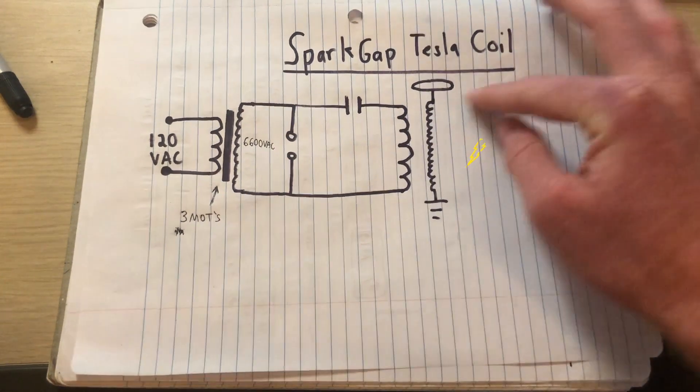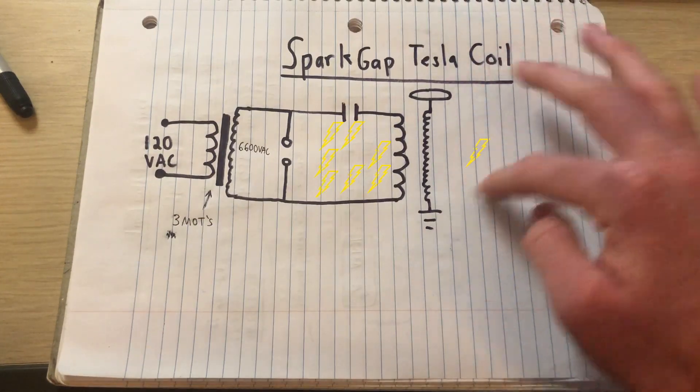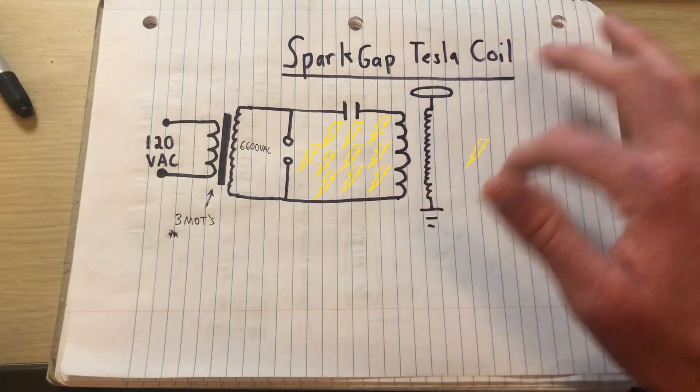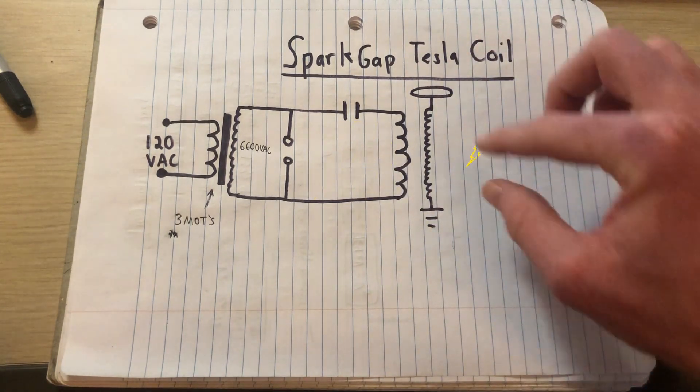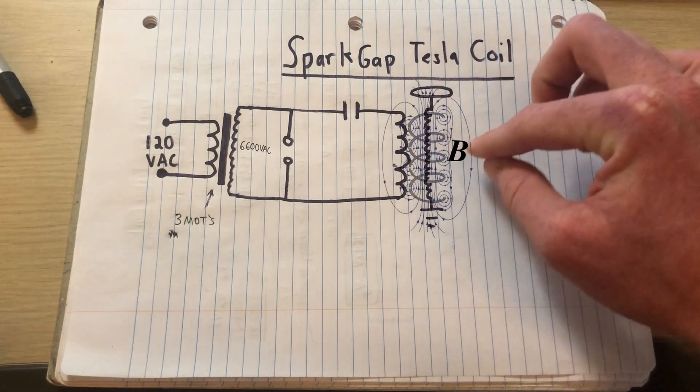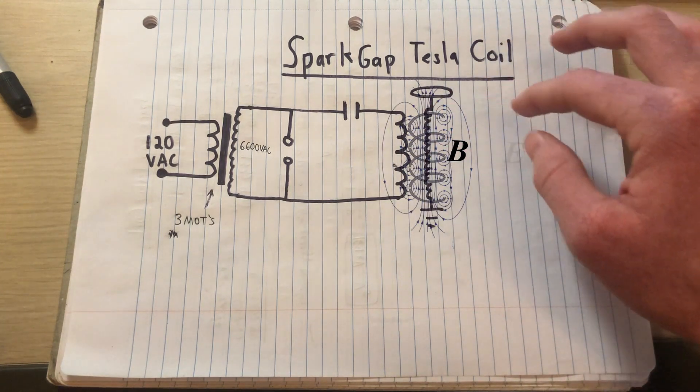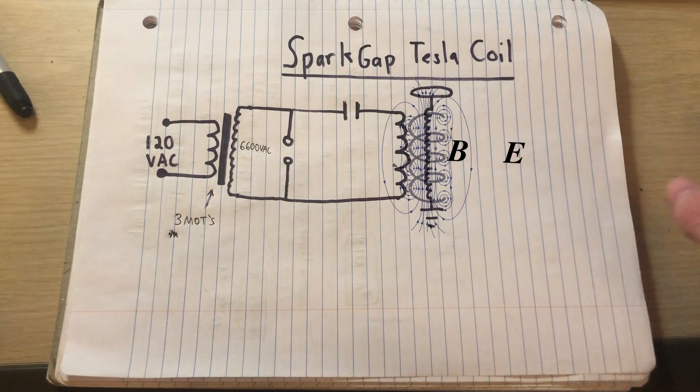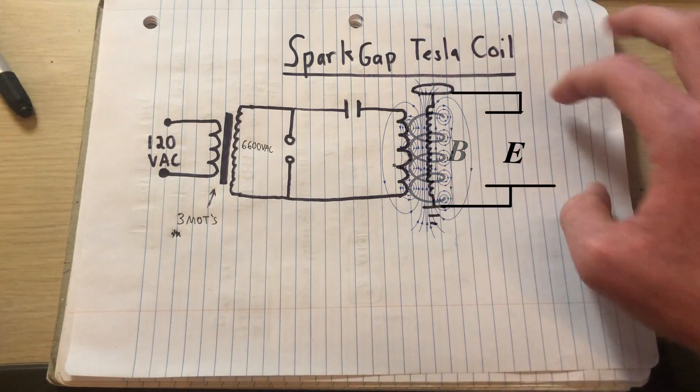This energy that's been transferred, which is about 10 to 20% of the input energy in a spark gap Tesla coil, is going to oscillate between being in the form of a magnetic field and being in the form of the electric field stored between the ground plane and the top load of the Tesla coil.